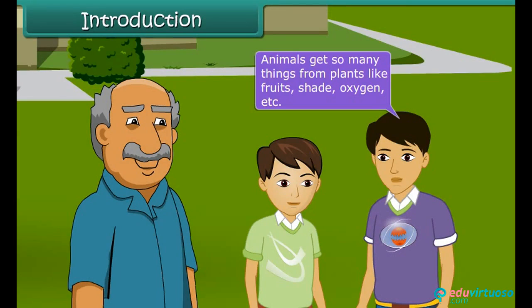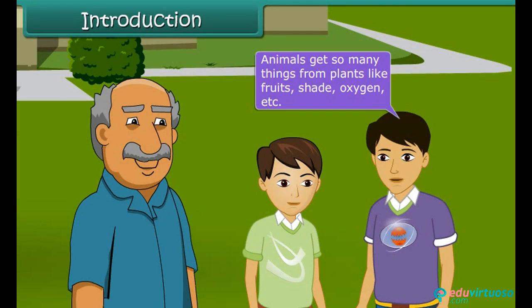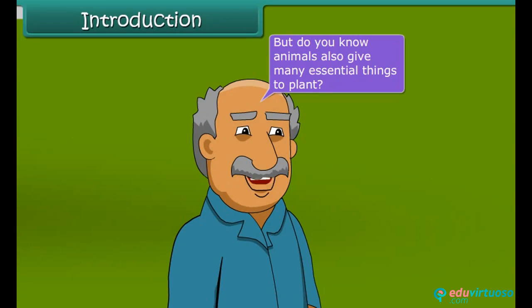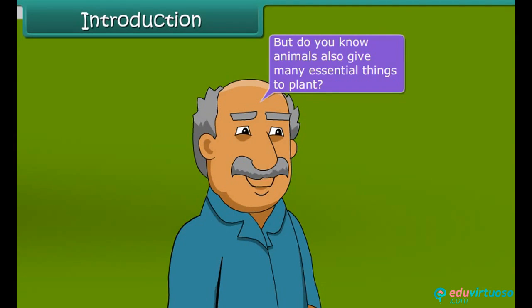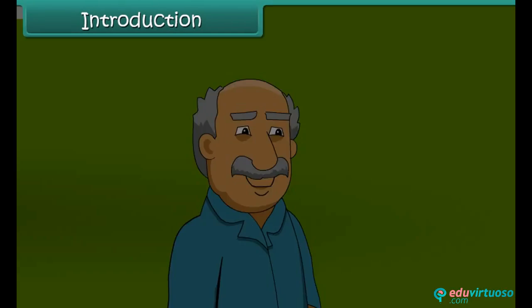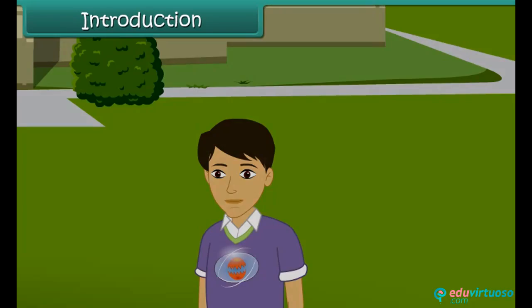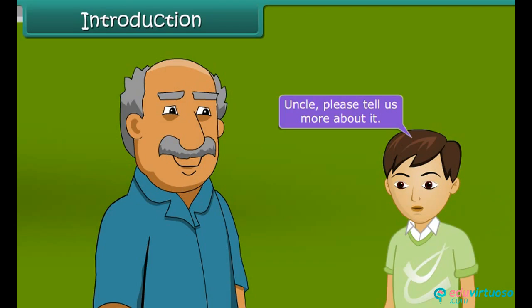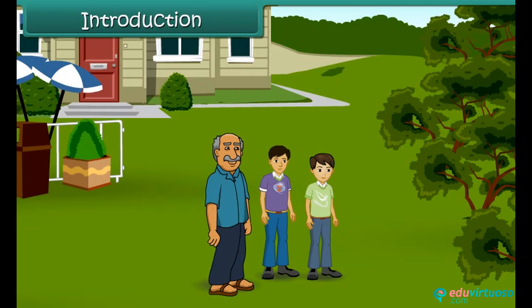Yes, you know that animals get so many things from plants like fruits, shade, oxygen, etc. But do you know that animals also give many essential things to plants? Really? Uncle, please tell us more about it. Okay, let's know more about the interdependence of living things.